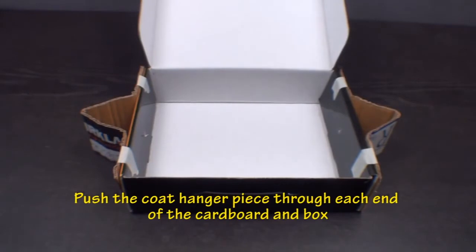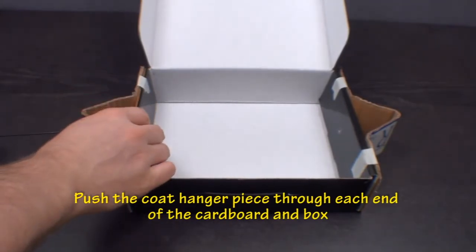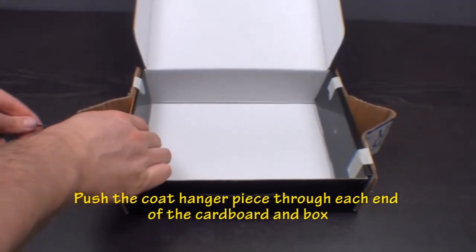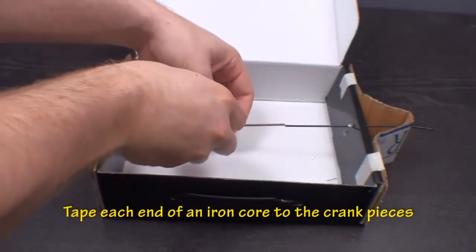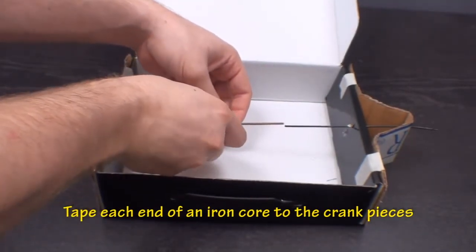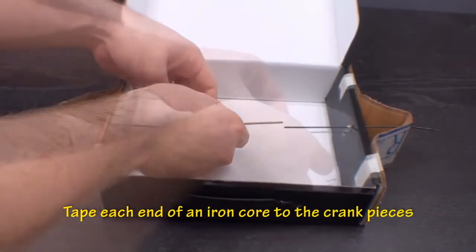Push the wire hanger pieces through the peaks of the corrugated cardboard and the box. Take an iron core and tape each end to the wire hanger crank.